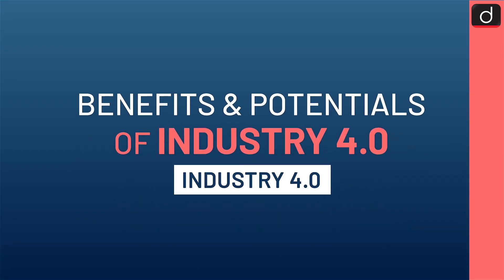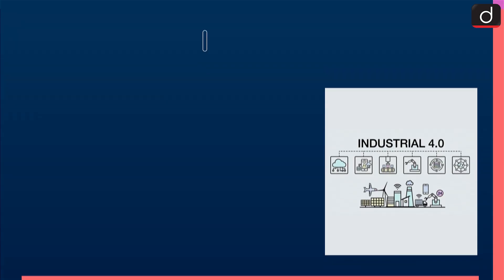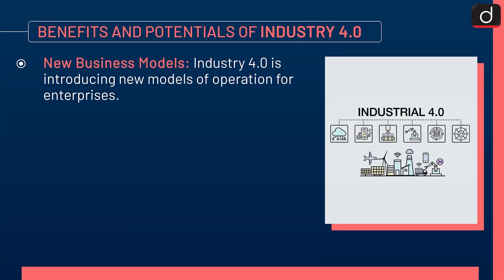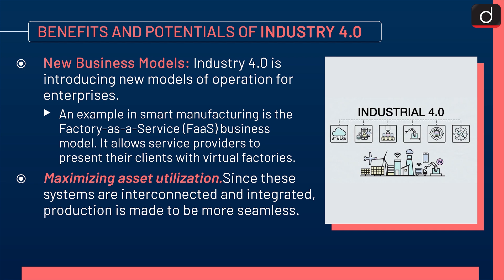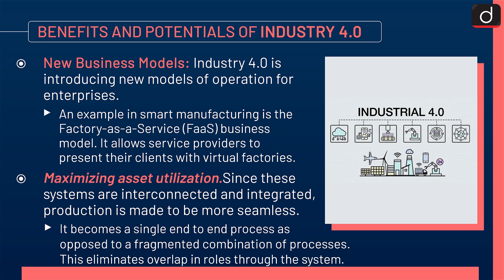Now let's discuss the benefits and potentials of Industry 4.0. First is new business models — Industry 4.0 is introducing new models of operation for enterprises. An example in smart manufacturing is the Factory-as-a-Service (FaaS) business model, which allows service providers to present their clients with virtual factories. Next is maximizing asset utilization: since these systems are interconnected and integrated, production is made more seamless — a single end-to-end process as opposed to a fragmented combination of processes, eliminating overlap in roles.